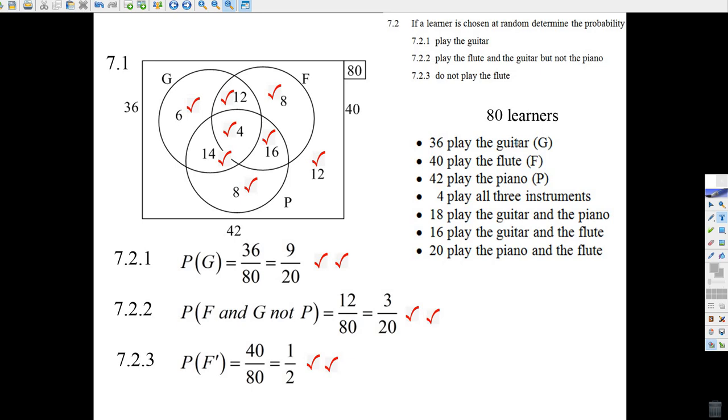Now, the other information: 36 people play the guitar, but don't put that 36 in there. All you know is all these different parts have to add up to 36. So put a 36 out there. 40 play the flute, put that out there. 42 play the piano, put that out there. You just know that all of this adds up to 42.